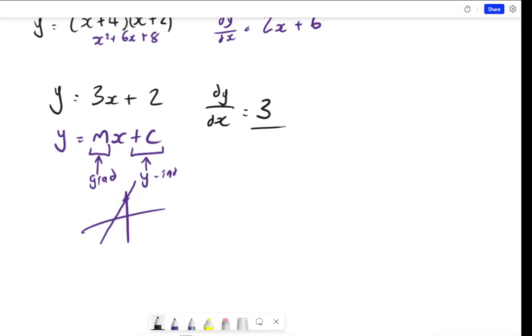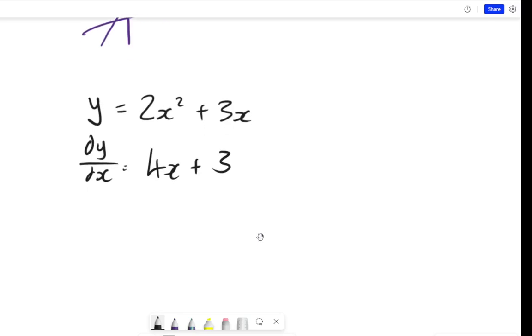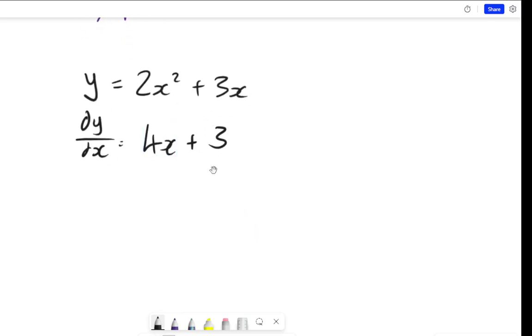But let's have a look at something where we do actually need to sub in an x-coordinate. Let's look at the equation y equals 2x squared plus 3x. Well, the derivative of this will be 4x plus 3, times by the power, take 1 off the power.